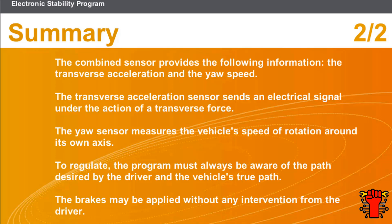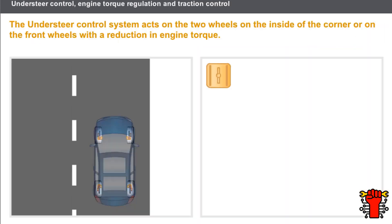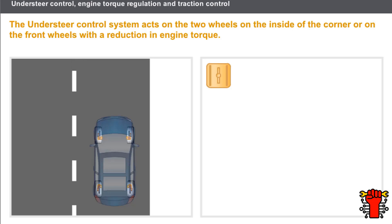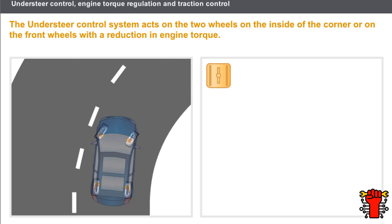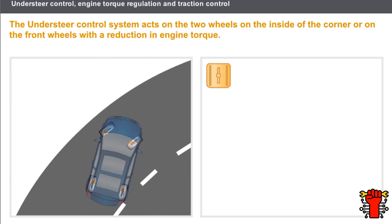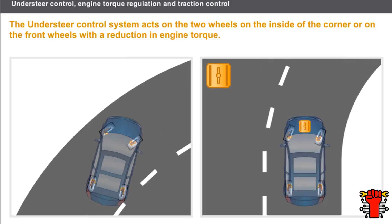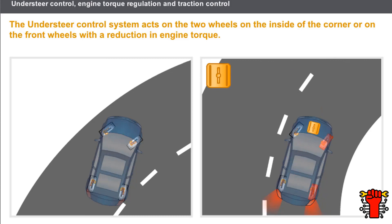The brakes may be applied without any intervention from the driver. Understeer control is an additional function of the electronic stability program. This function intervenes during loss of control of the vehicle during understeer. The correction acts on the two wheels on the inside of the corner, or on the front wheels with a reduction in the engine torque.